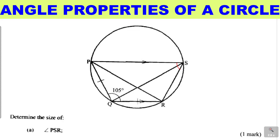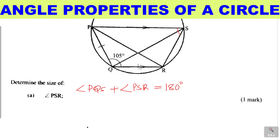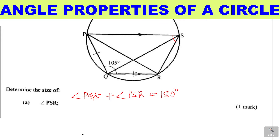How do you get that? When you consider this cyclic quadrilateral — that is, a quadrilateral that has all four vertices touching the circumference of the circle — we have a property relating to that. Angle PQR plus angle PSR, which is the required angle, should add up to 180 degrees. These two are opposite angles: PQR and PSR.